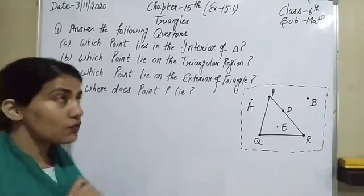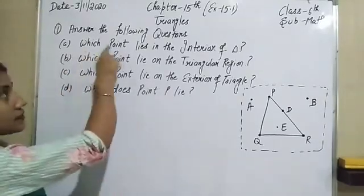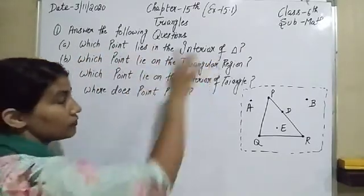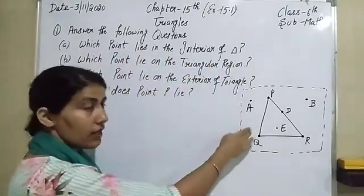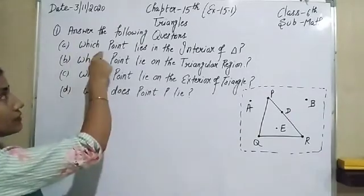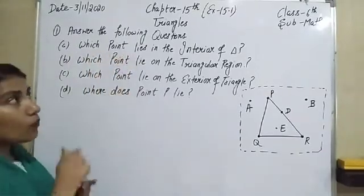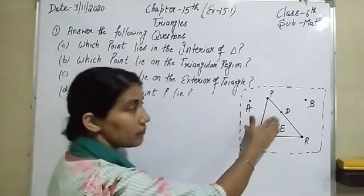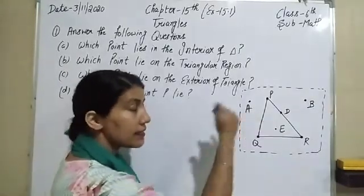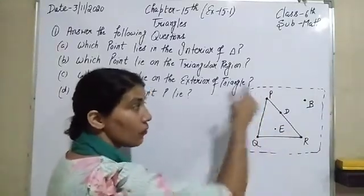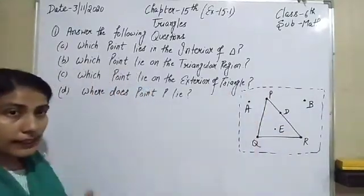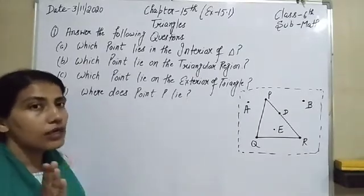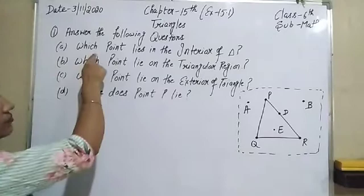Let's start the first worksheet. The first question is: answer the following questions. The first one is: which point lies in the interior of the triangle? Here a triangle is given, and we have to write down the points that lie on the interior of the triangle. Now, interior means inside of the triangle, and exterior means the outside points of the triangle.